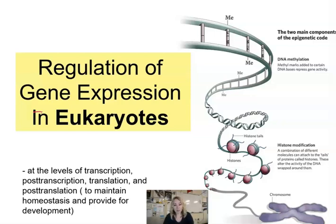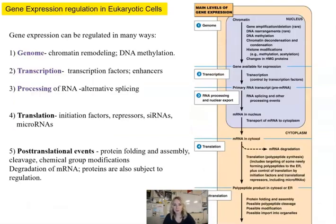Now we're going to talk about gene expression regulation in eukaryotic cells. There are lots of different things happening here to regulate gene expression at many regulatory levels. We have genomic changes, transcription, and RNA processing — all three happening inside the nucleus. And then we have processes that happen outside the nucleus: translation and post-translational modifications to our product.